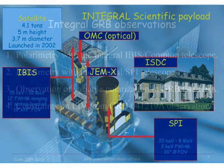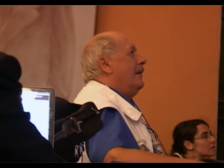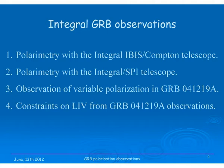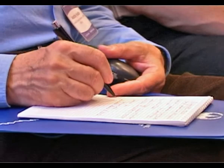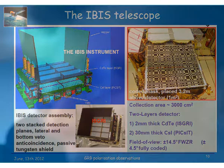I will present the INTEGRAL IBIS and SPI observations of the Crab. Crab polarization has been observed by both telescopes independently and with similar results, which gives confidence. Beginning with IBIS: it has two detector layers — a CdTe layer called ISGRI made by CEA, and a CsI layer called PICsIT made by Italian colleagues in Bologna. The whole system is surrounded by an active anti-coincidence of BGO and passive shields of tantalum and lead.